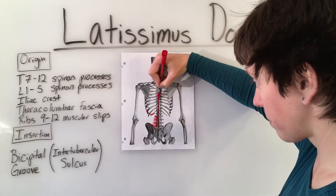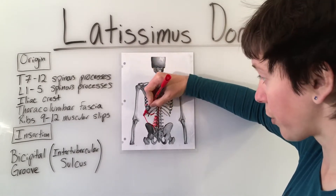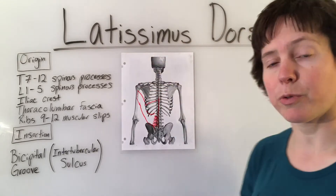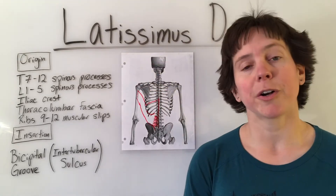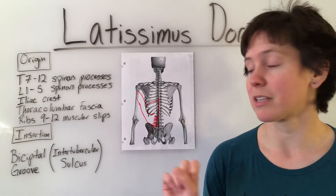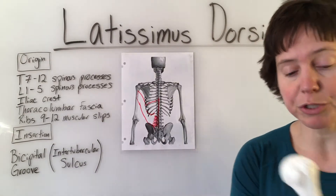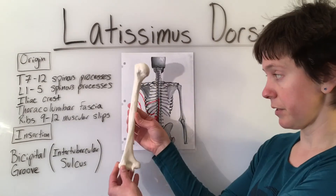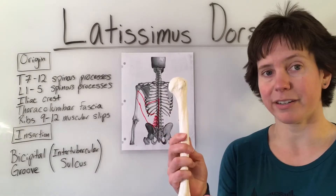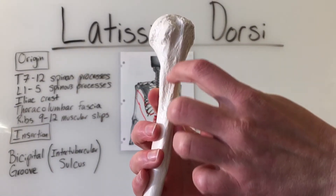This pretty big muscle goes superiorly to insert on the bicipital groove, also known as the intertubercular sulcus. Here we have the left humerus, anterior side, and the intertubercular sulcus is right here.